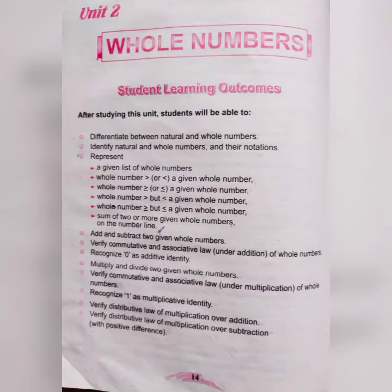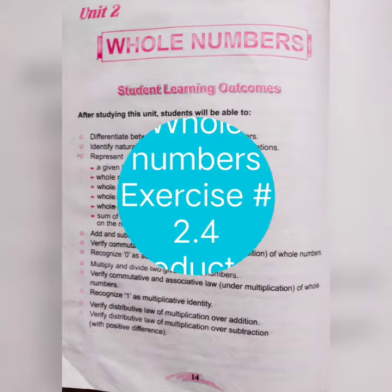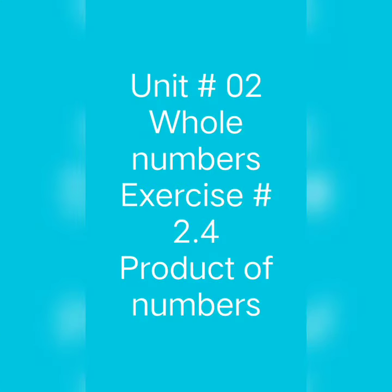We are doing unit number 2, which is whole numbers. In this case, we have whole number properties. Today, we have exercise 2.4. We will learn about whole number products, which means we multiply whole numbers with whole numbers. It is simple - we multiply the numbers.